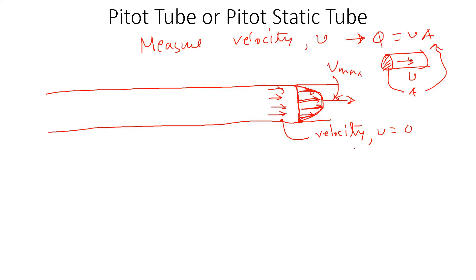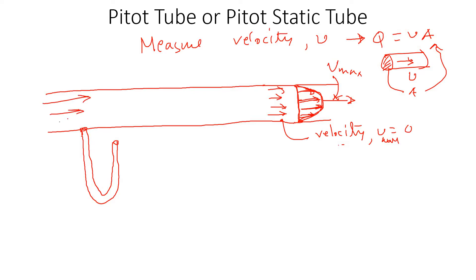Now think about this: velocity at the wall is zero, and maximum in the middle. If I place a manometer here — it's small, filled with water, and air is flowing through the pipe — and I have a hole here at the wall, when the fluid is flowing, it has pressure everywhere. According to Pascal's law, the pressure inside this pipe, if we ignore small losses, will be the same. When it pressurizes the manometer fluid, because you have high pressure here and the atmosphere has less pressure, it will create a pressure difference.